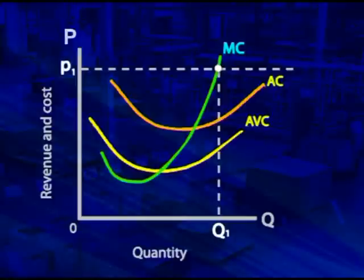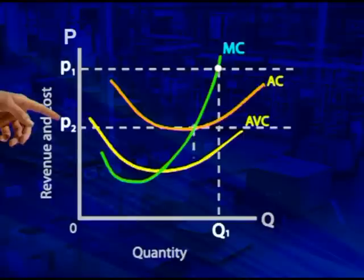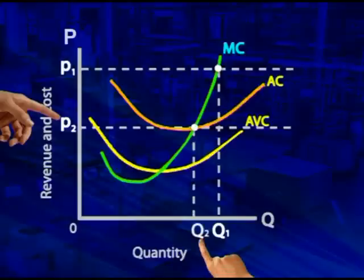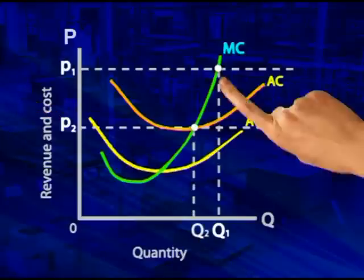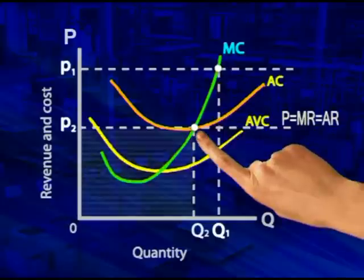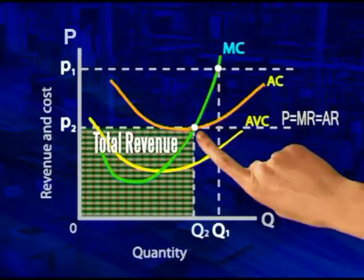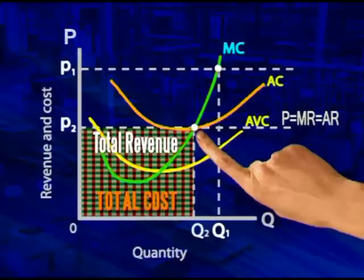Now let's assume the market set a different selling price, P2. How profitable would the firm be then? The total revenue would be P2 times Q2. Why quantity 2? Remember, the firm produces at the point where the MC and MR curves intersect. Total cost at this level of production is also P2 times Q2.